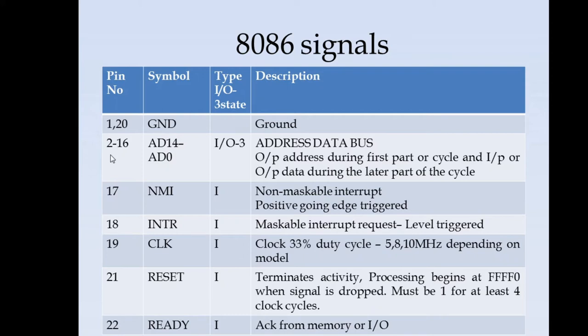Pins 2 to 16 are AD0 to AD14. AD refers to the address and data bus. Bus indicates a group of signals doing the same functionality. Since all of these pins do similar functionality they are grouped to call it as bus. This address and data bus are multiplexed. These pins act as address during the first part of any cycle and they act as input or output data during the later part of the cycle.